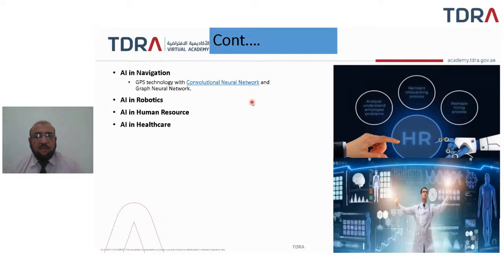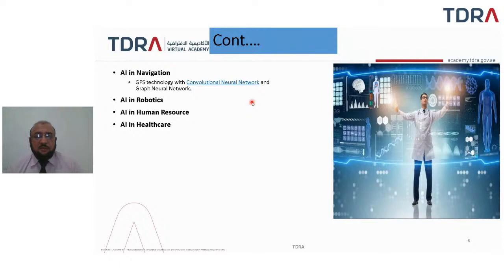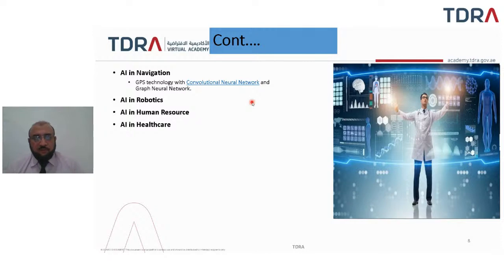Then we have AI in healthcare, which is helping doctors and also helps with medicine prescriptions, assisting during different types of operations, analyzing diseases, and suggesting treatments and prescriptions. Then we have AI in agriculture — AI can be used for livestock management, weather forecasting, field condition management, soil health, and water management.